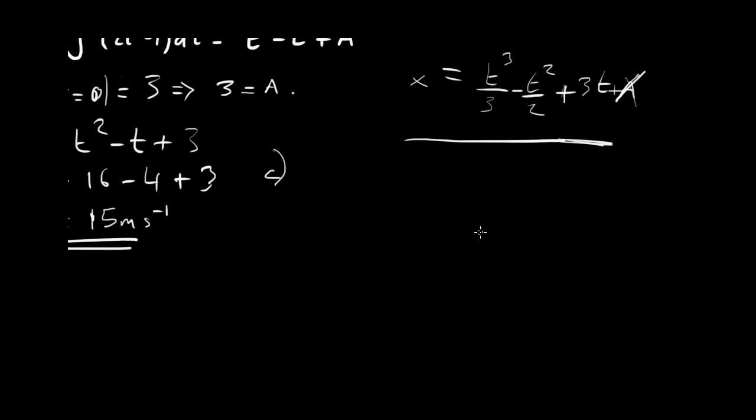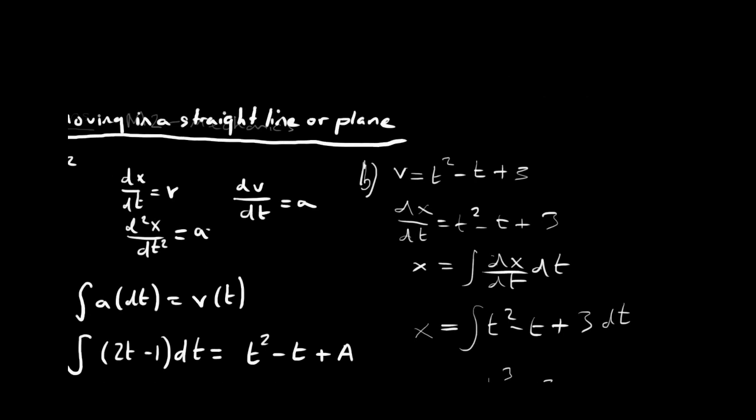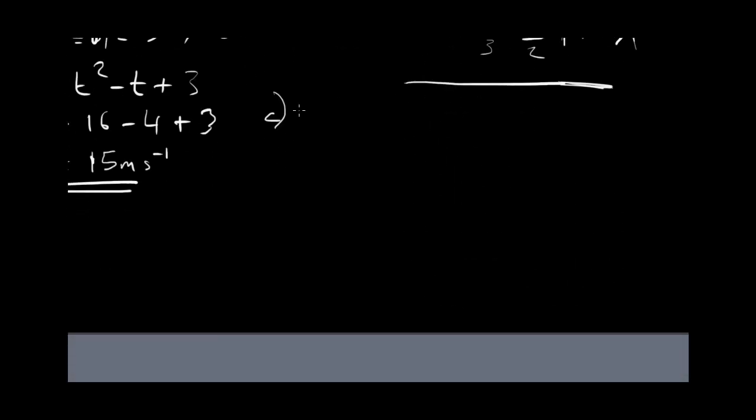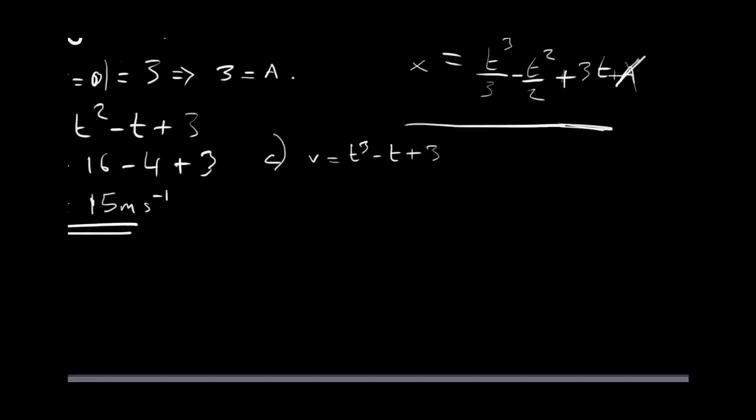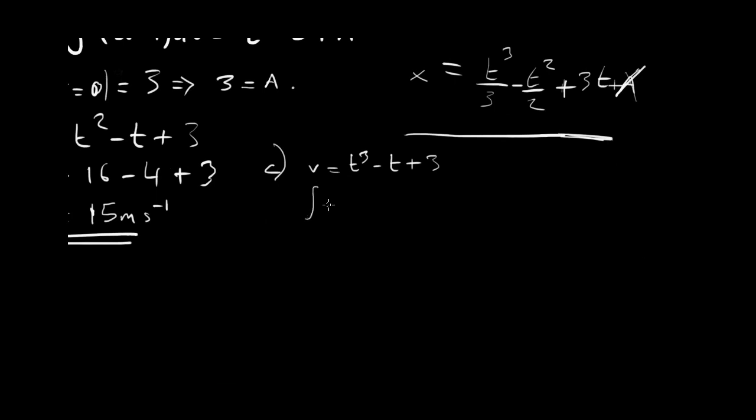So, if the expression for velocity is t squared minus t plus 3, then the integral of velocity with respect to time between t equals 1 and t equals 3, which is what the question asks us for, is going to equal the distance that we're interested in. So, that's going to be the integral from 1 to 3 of t squared minus t plus 3 with respect to time.